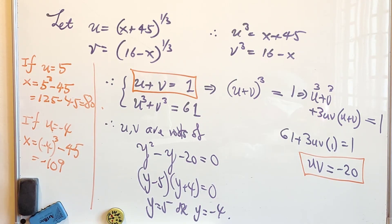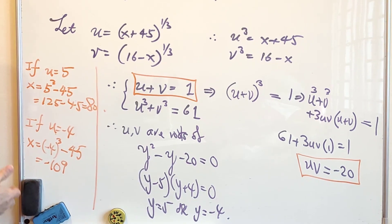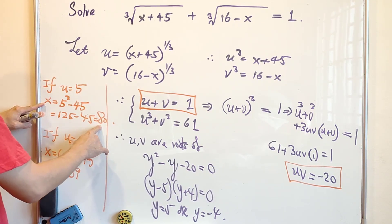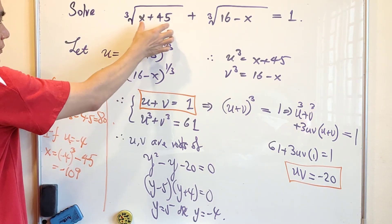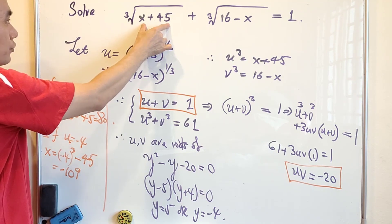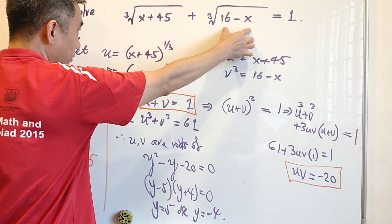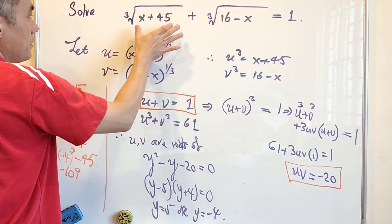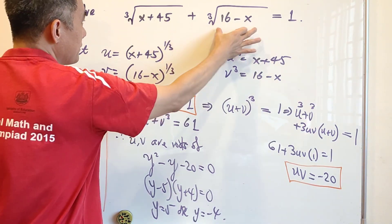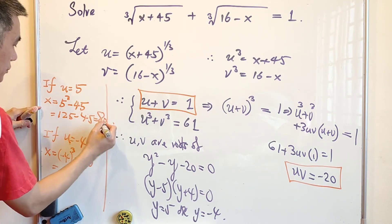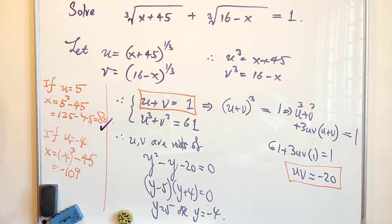Now it is always a good habit to check whether these are the answer. So when x equals to 80, this will be equal to cube root of 125 and this is cube root of negative 64. So it means that it is 5 plus negative 4, which is 1. So x equals to 80 is one of the correct solutions.